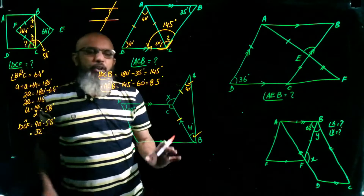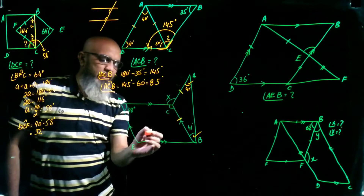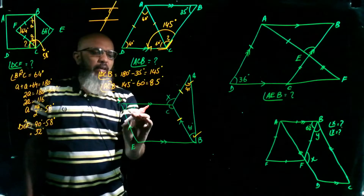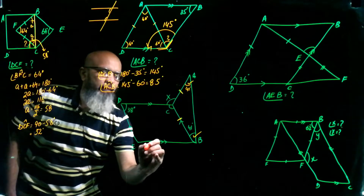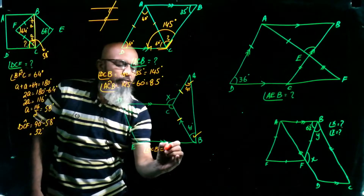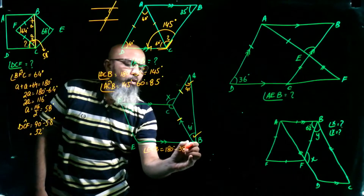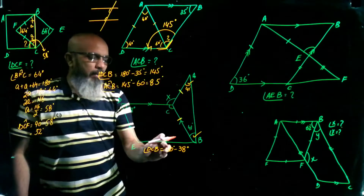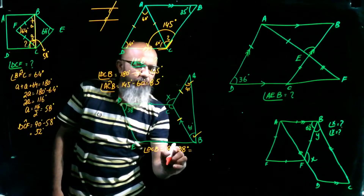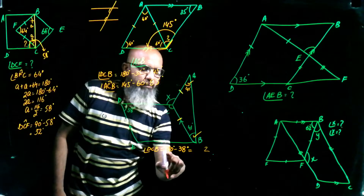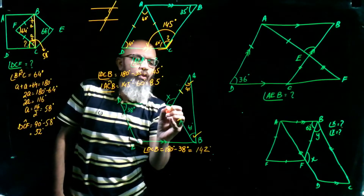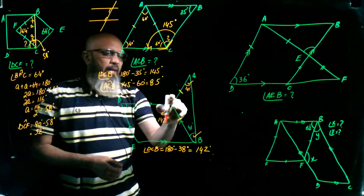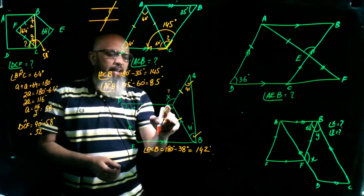BCDE is a parallelogram. In a parallelogram, opposite angles are equal and co-interior angles sum to 180 degrees. Given angle 38 degrees, angle DCB = 180 - 38 = 142 degrees. We need to find angle X.